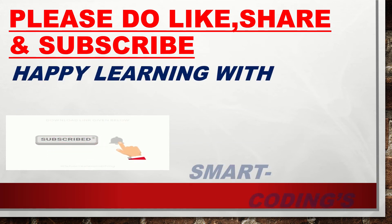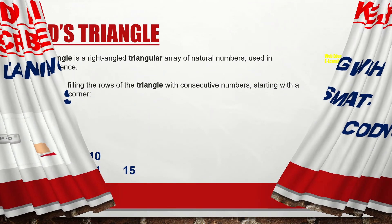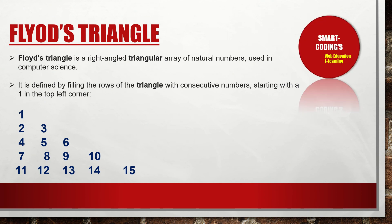Let's get started with Floyd's Triangle. The basic definition is: Floyd's Triangle is a right-angle triangular array of natural numbers used in computer science. It is defined by filling the rows of the triangle with consecutive numbers starting with 1 in the top left corner. This is what Floyd's Triangle looks like — starting from the top left, the value is 1, and it prints the series of numbers in a consecutive manner forming a triangular shape.